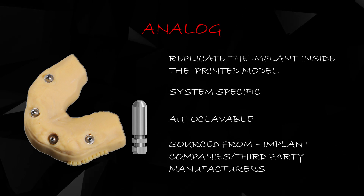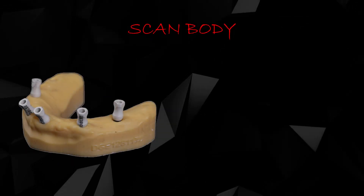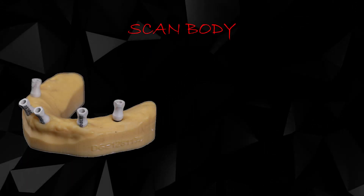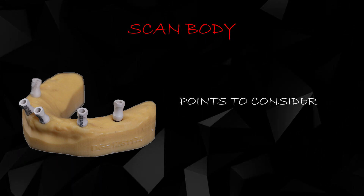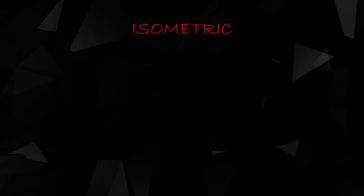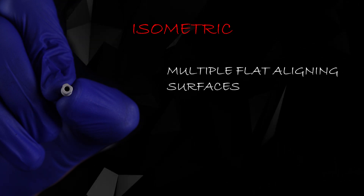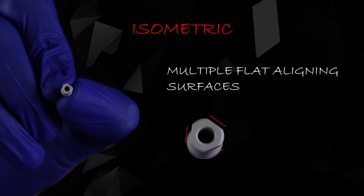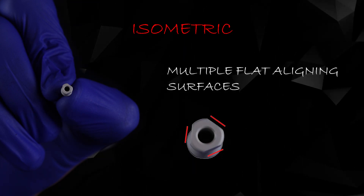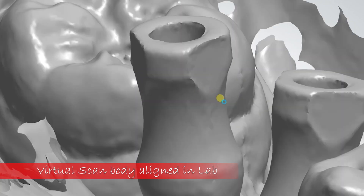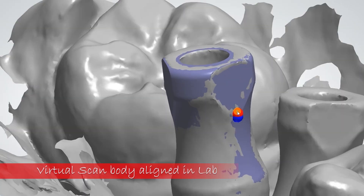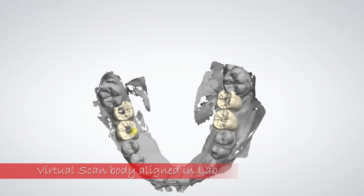Now that you have clarity on the various components used in the digital implant workflow, here are some crucial points to consider when using scan bodies. The scan bodies should be isometric — in simple words, they should have multiple flat aligning surfaces that help the technician align the virtual scan body in the lab and give you an accurate passive implant restoration. While placing the scan bodies in the mouth, one of these aligning surfaces must be on the buccal side for easy access in the CAD software.